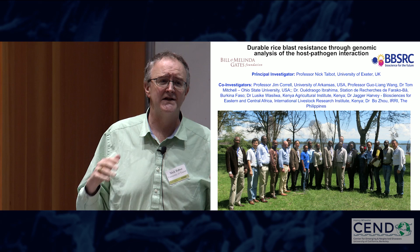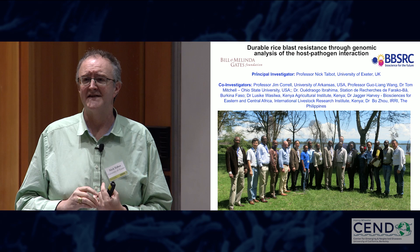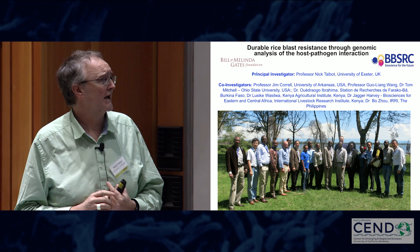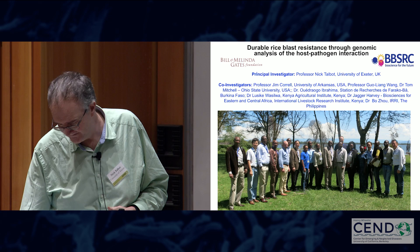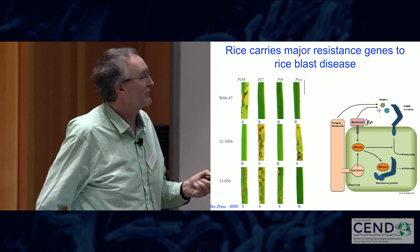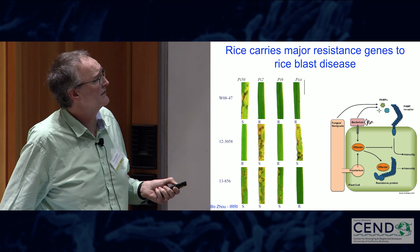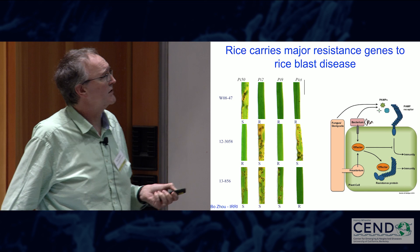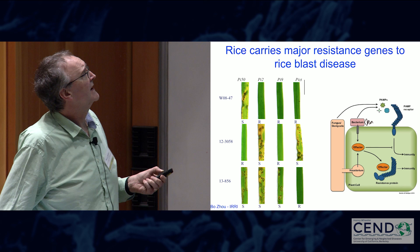Rice blast disease is actually the biggest single constraint on rice production across the sub-Saharan African region. Barbara talked about avirulence genes which encode effectors. As you've heard, effectors are involved in the suppression of plant immunity, but sometimes those effectors can be recognized by immune receptors — the products of major disease resistance genes in plants. By understanding the population structure, we can learn which resistance genes would be necessary to control the prevailing population of the fungus.